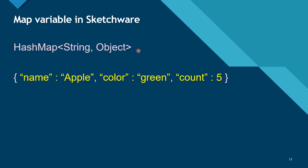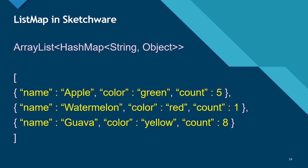In Sketchware, the map variable code is HashMap String Object. This represents a JSON object — a key-value pair where the key is a String and the value is an Object. So 'color' will be a String variable and 'green' will be an Object, and 5 will also be an Object. The list map in Sketchware is ArrayList HashMap String Object — this is an array of map variables, or a list of map variables. So here is the first JSON object, then a comma, then the second JSON object, then the third JSON object, all enclosed in square brackets — this is an array of JSON objects.